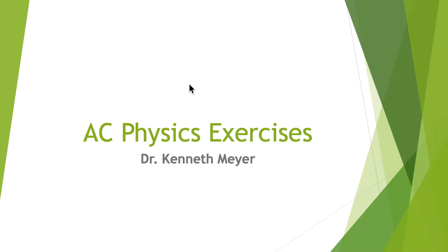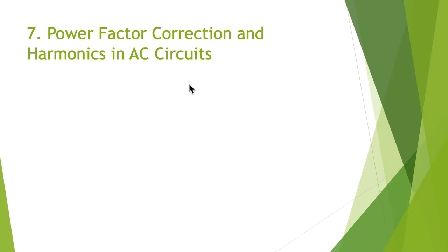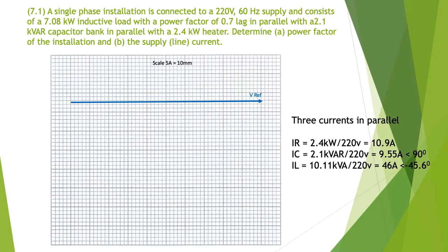Welcome to AC Physics exercises number seven: power factor correction and harmonics in AC circuits. Here we have a single phase installation connected to a 240 volt, 60 hertz supply consisting of a 7.08 kilowatt inductive load with a power factor of 0.7 lag in parallel with a 2.1 kVA capacitor bank in parallel with a 2.4 kilowatt heater.